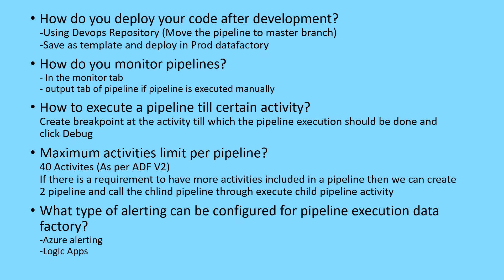You might also get questions like: how do you deploy your code after development? If you have configured DevOps in your Data Factory, you work in your feature pipeline and move it to the master branch, which will then be deployed. Alternatively, if you have separate Data Factories for prod, non-prod, dev, and UAT, you save your pipeline as a template, put it into a repository, and ask the admins to deploy it to the production Data Factory.